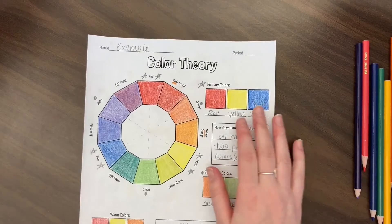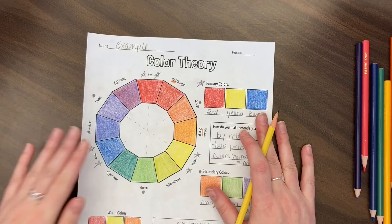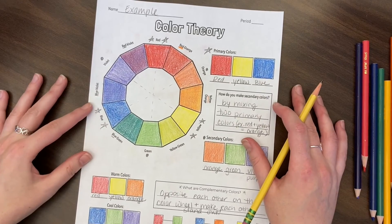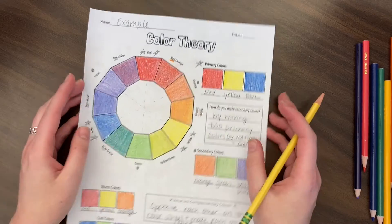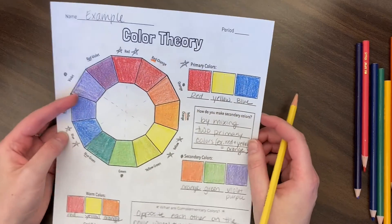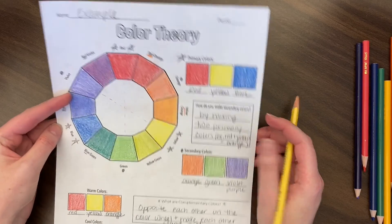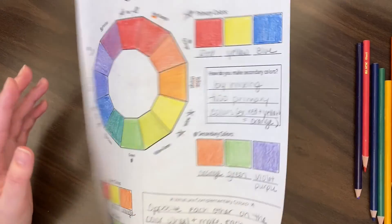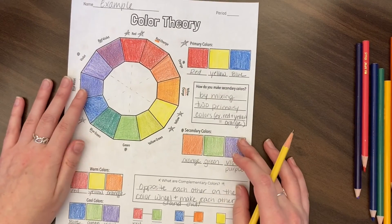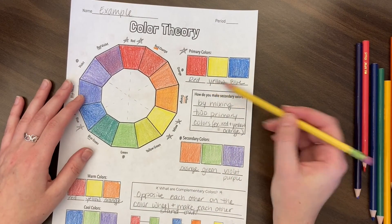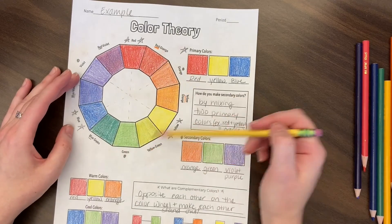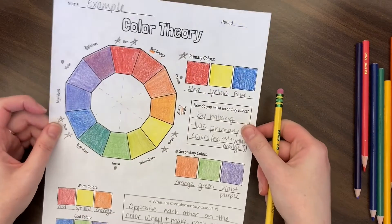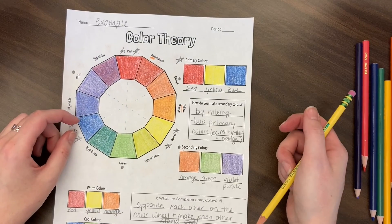Here is our completed color theory sheet. Go ahead and take a picture and submit if you're in my course right now. This is our cheat sheet — we're going to use it for our projects moving forward. Remember all the vocabulary is on the back. I'm really looking for you to include the language and definitions and then have your colors here as that cheat sheet for us moving forward.